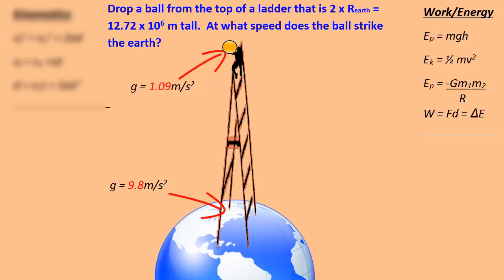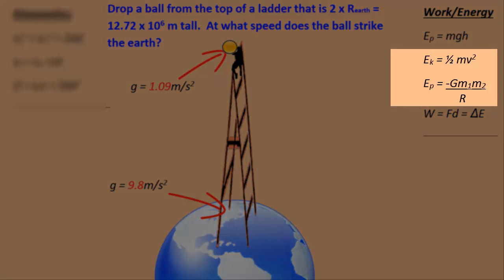Now on the work energy side, we know that g varies. So our first equation where we say EP is mgh is not going to work for us because g varies throughout the flight. We have to use something that's more universal. Now the only two equations that are truly universal are the kinetic energy, which depends on the speed at the moment, and the universal gravitational potential energy is given by negative G m₁ m₂ over r.